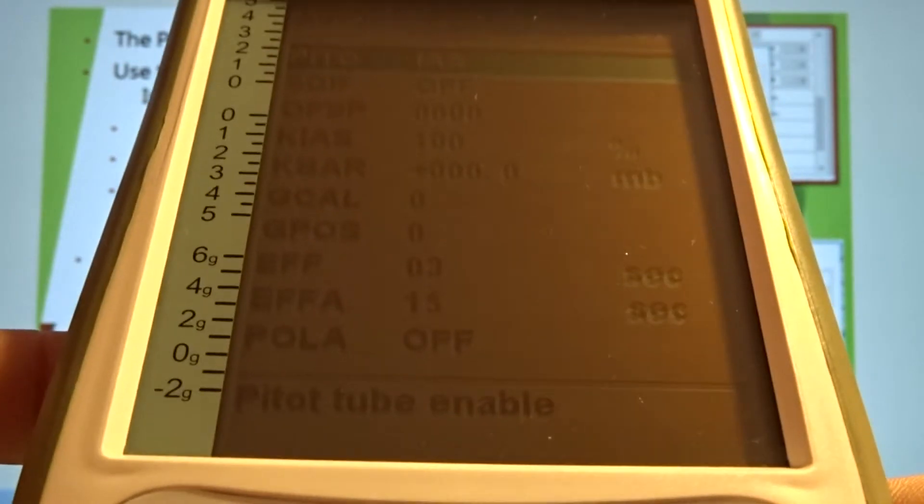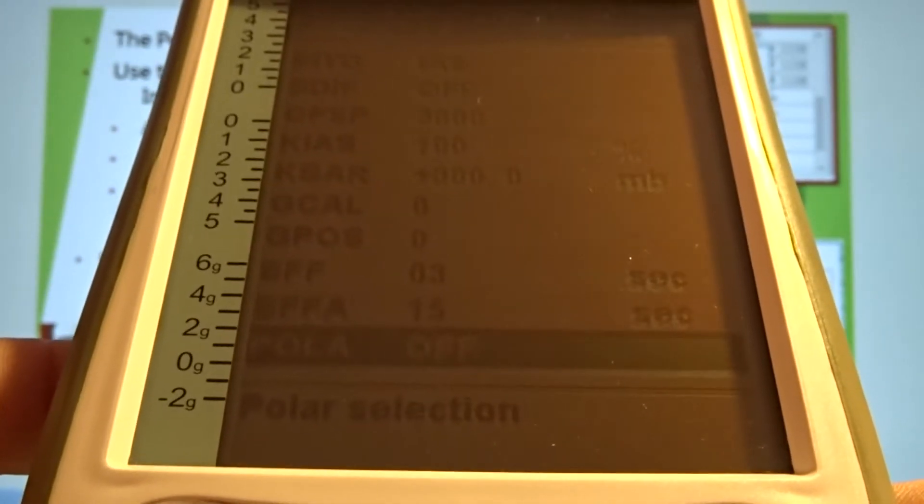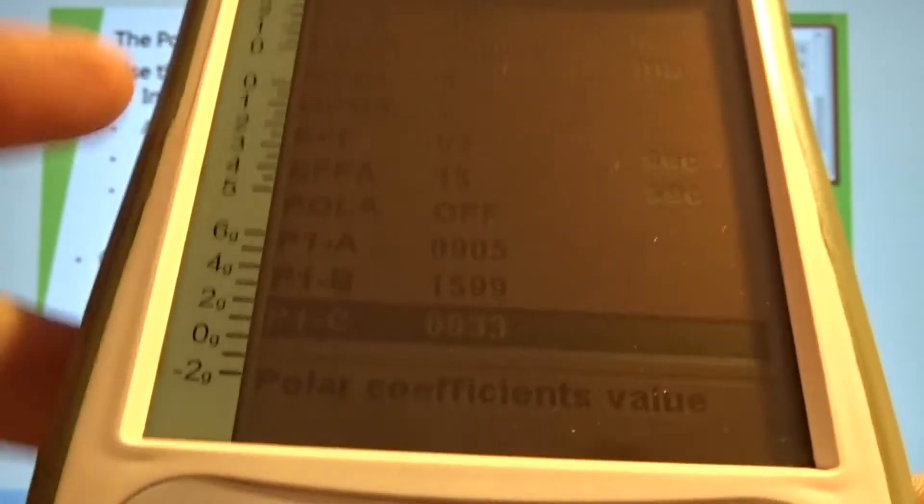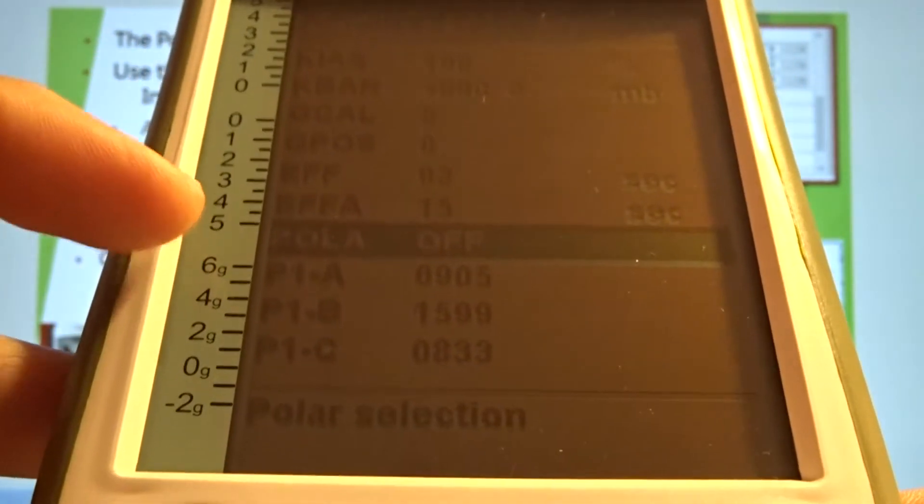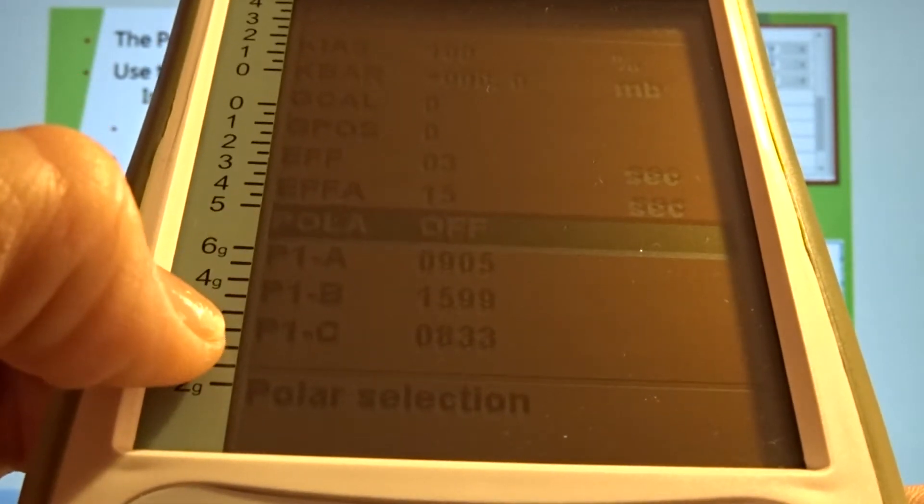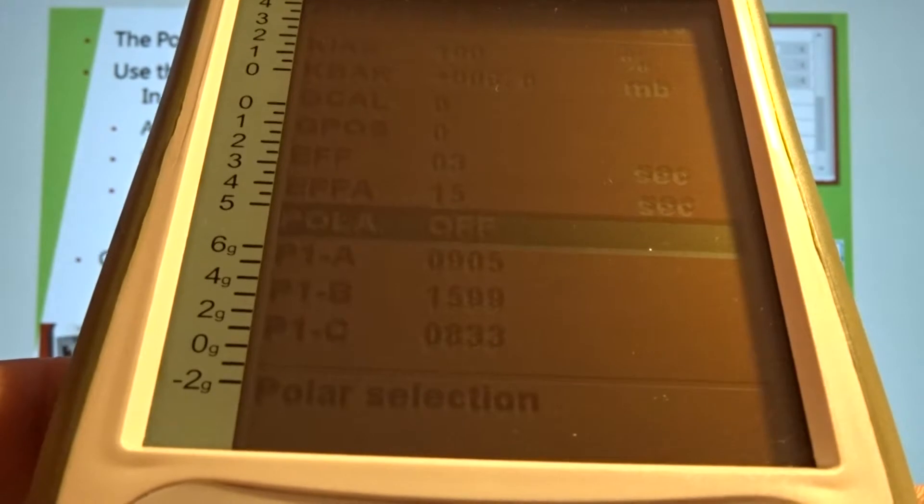And then I scroll down to the Polar Settings. Now, you have the Polar On or Off setting, which is this one. And then you have three different polars, and for each polar, you have an A, B, and C values. So I'm going to take you down this menu.